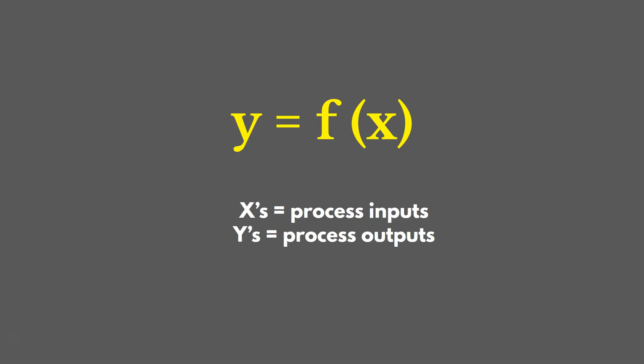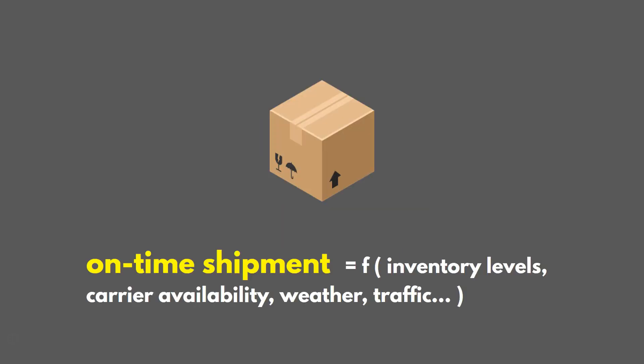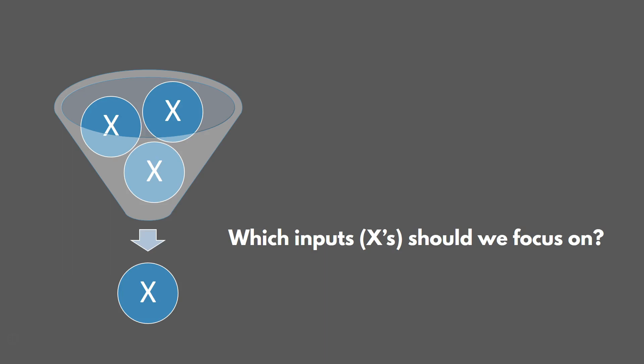When we frame process problems, we use the formula y = f(x), where y is the output of our process and x's are the inputs. For example, if the output we want is on-time shipment, that's a function of inputs like inventory levels, availability of carriers, and weather and traffic. As we go through the DMAIC cycle, we narrow down those inputs to figure out which ones to focus on — ideally ones that are fairly easy to fix and will have a positive impact on our process.